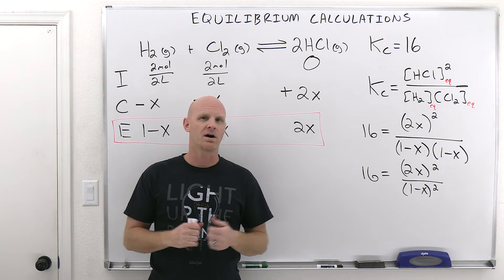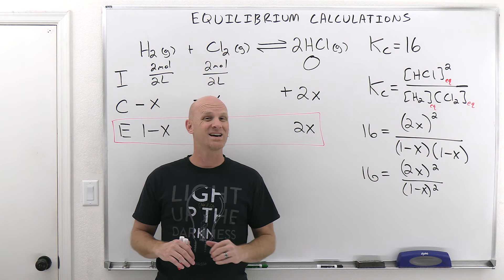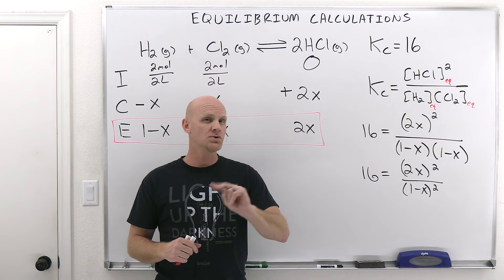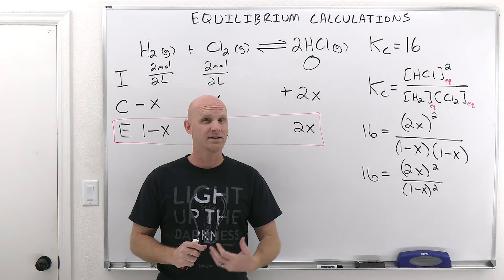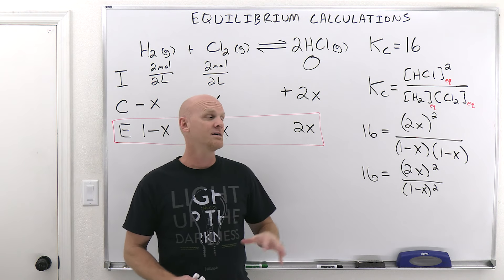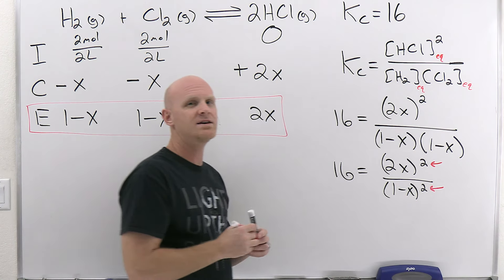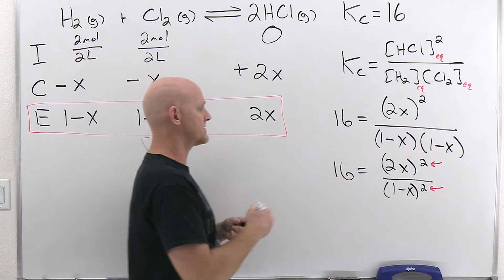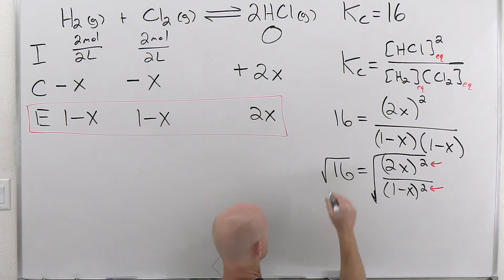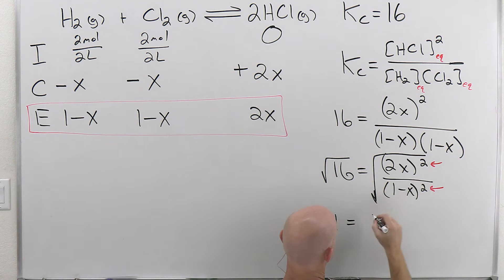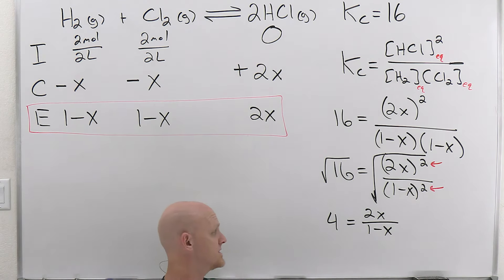There are really two principal types of calculations that look like they're going to set up like a quadratic, but you can get around it. Because of that, even if your professor says you'll never have to do a quadratic on the exam, they can ask you a question like this, because there's a way around it. The key is realizing that you have a perfect square in the numerator and a perfect square in the denominator. As a result, you can take the square root of both sides. The square root of 16 is 4. The square root of 2X squared is just 2X. And the square root of 1 minus X quantity squared is just 1 minus X. Now we don't have a quadratic anymore — no X to the power of 2 at all.